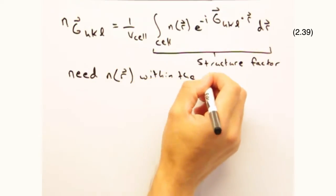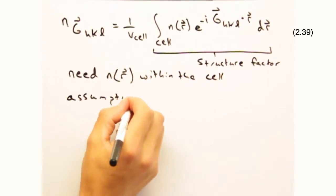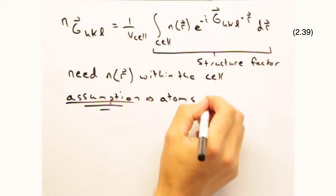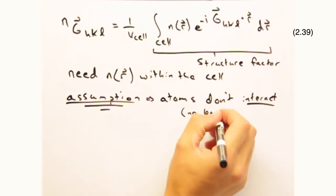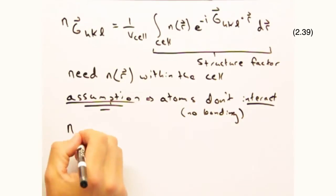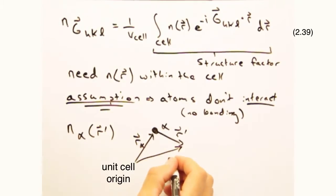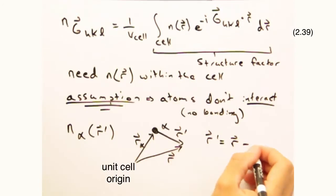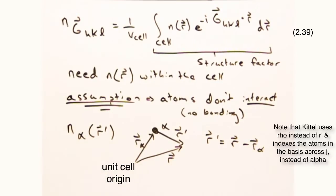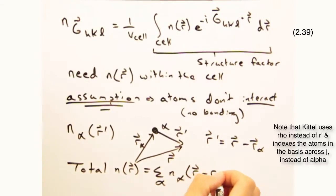Yeah, and so to describe the scattering density within one unit cell, we'll first invoke that the atoms within the cell don't interact with each other and have their own local scattering density called n alpha as a function of r prime, where r prime points from the atom to some position vector r. And like before, we can state that our total n of r is the sum of all of these n alphas over all the atoms in the unit cell.